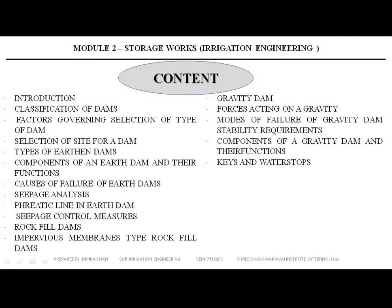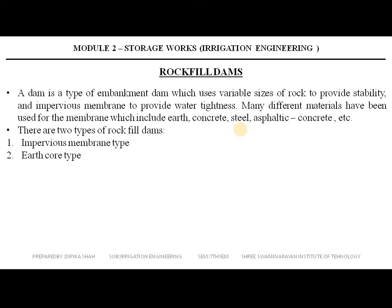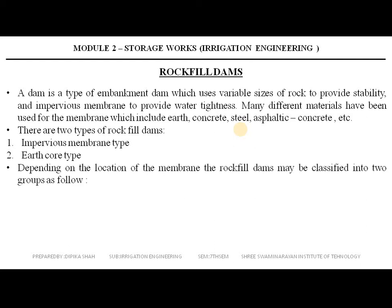Today we will study about rock fill dams. A rock fill dam is a type of embankment dam which uses variable sizes of rock to provide stability, and an impervious membrane to provide a watertight barrier. Many different materials have been used for the membrane, which include earth, concrete, steel, asphaltic concrete, etc. The membrane may be placed either within the rock fill or on the upstream slope. There are two types of rock fill dams: first is the impervious membrane type and the second is the earth core type. Depending on the location of the membrane, rock fill dams may be classified into two groups.